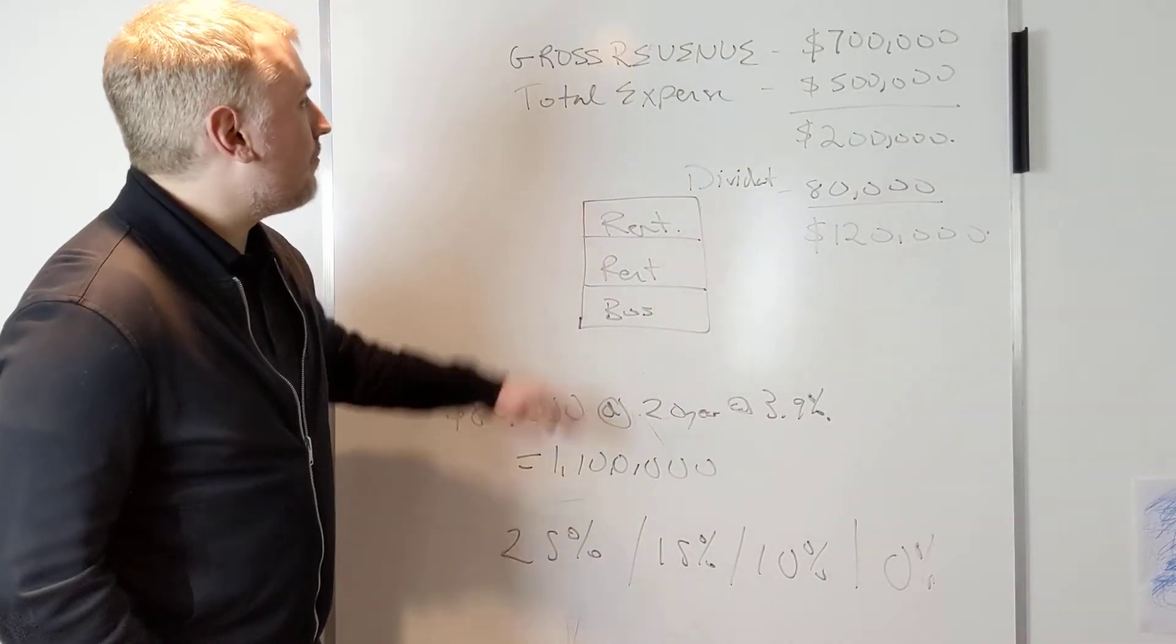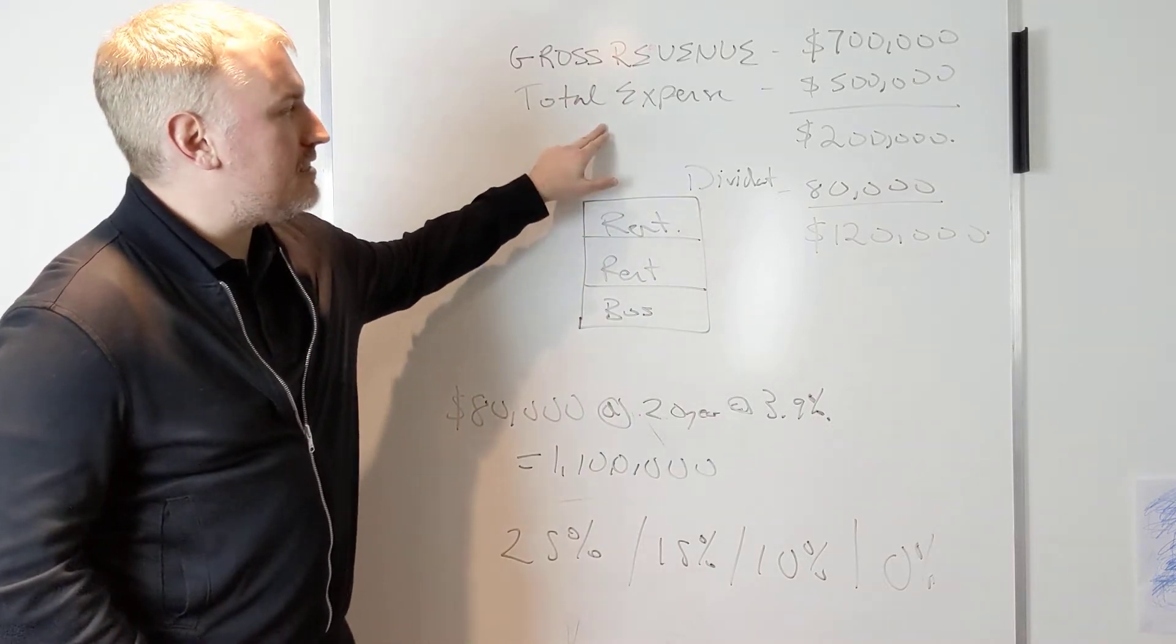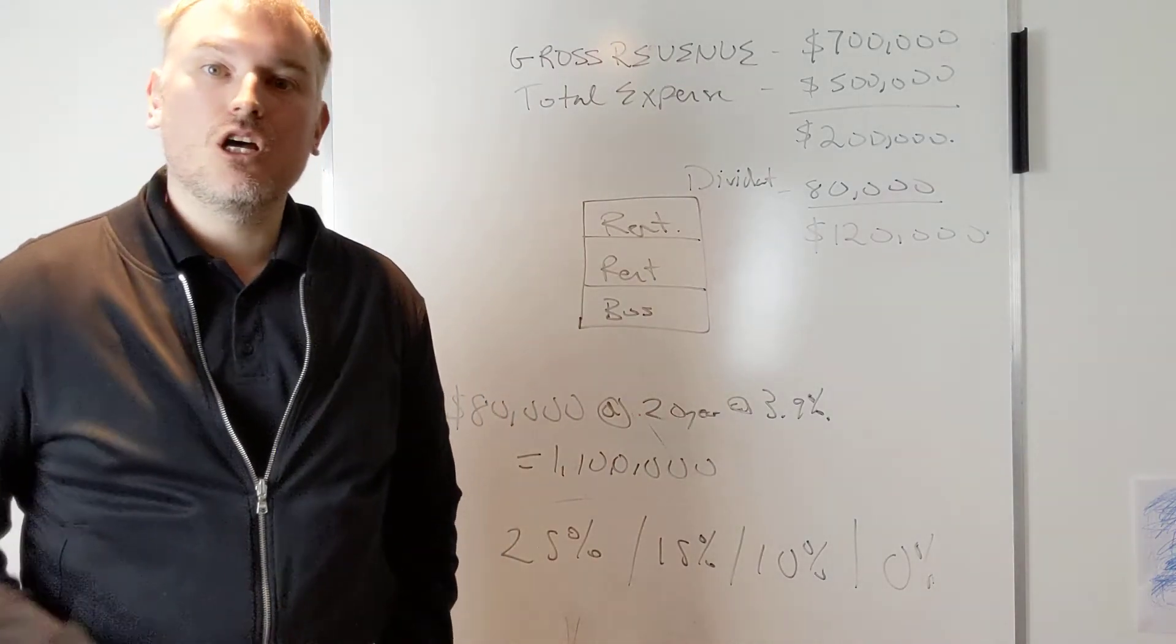So here's the scenario. Their gross revenue is about $700,000. Their total expense is half a million which leaves about $200,000 net income to work with.